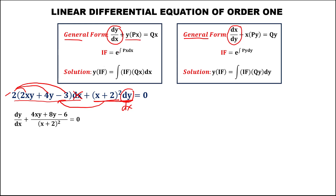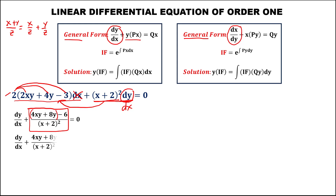Observe that in the general form we have y·P(x). From the second term, we need to group all terms with y and terms without y. Since x over z plus y over z can be separated, and since these two terms contain y, we separate them: this becomes dy over dx plus (4xy plus 8y) over (x plus 2)² minus 6 over (x plus 2)² equals 0.